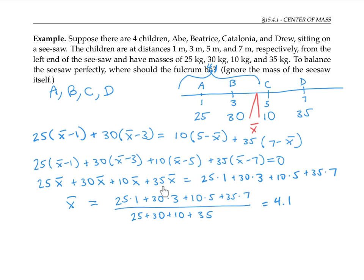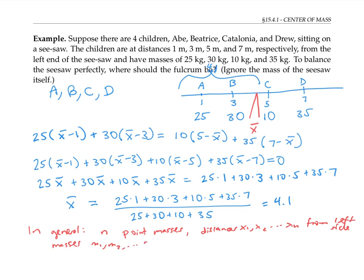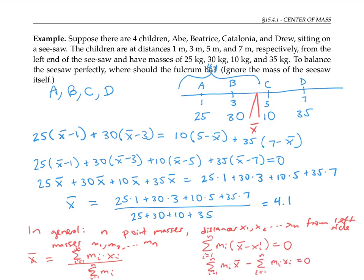Notice that the numerator of the expression is the sum of the masses times the distances, while the denominator is the sum of the masses. So in general, if we have n point masses located at positions x₁ through xₙ, with masses m₁ through mₙ, then the position x̄ where we put the fulcrum to balance the seesaw is the sum of mᵢ times xᵢ divided by the sum of the mᵢ. This follows from requiring the sum of all rotational forces — proportional to mass times distance from the fulcrum — to be zero.